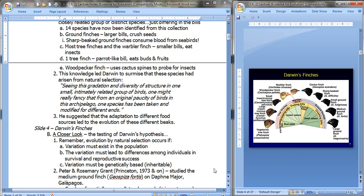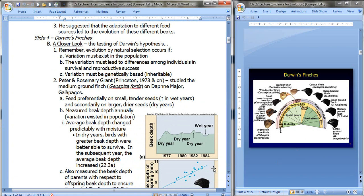Well, that certainly makes sense, but did you know that this has actually been tested in modern times? So remember that evolution by natural selection occurs if there has to be variation in the population, the variation has to lead to differences among the individuals in their survival and their reproductive success, and of course the variation has to be genetically based, it has to be heritable otherwise it wouldn't be passed on.